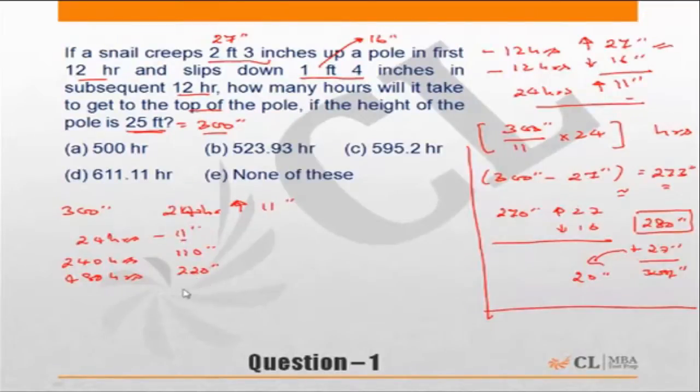Or in 480 hours by 220 inches. To come close to 273, 11 times 5 is 55, so let me add 55 inches more. 220 plus 55 makes it 275 inches. So 275 will be additional 24 times 5, which is 120 hours. So it will reach 275 inches in 600 hours.